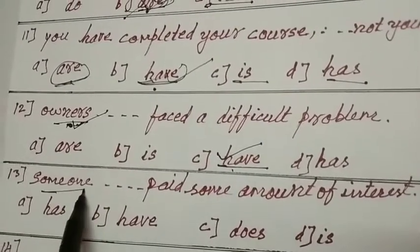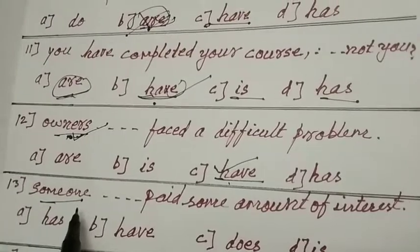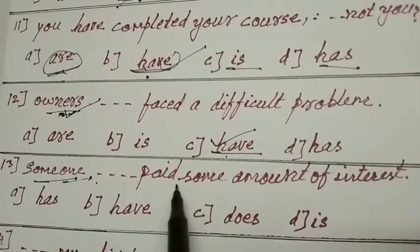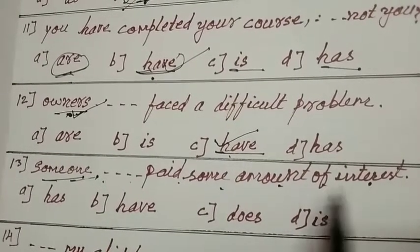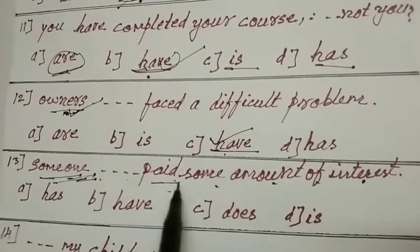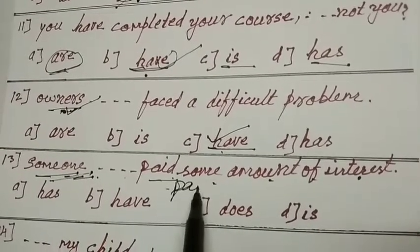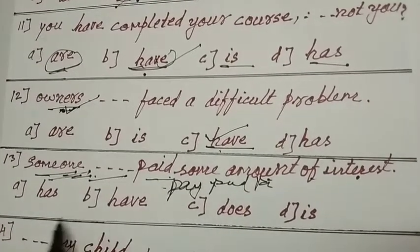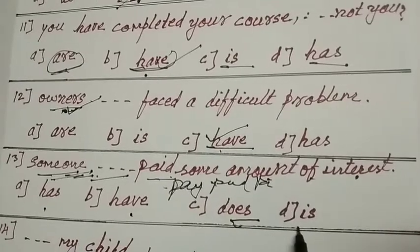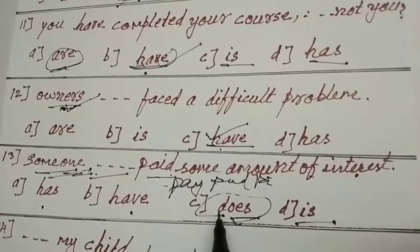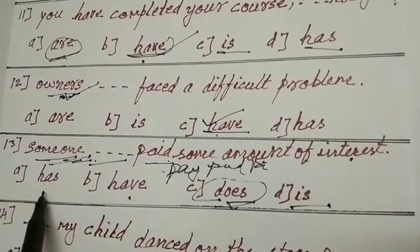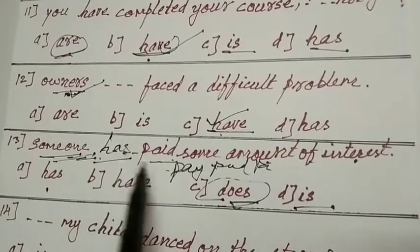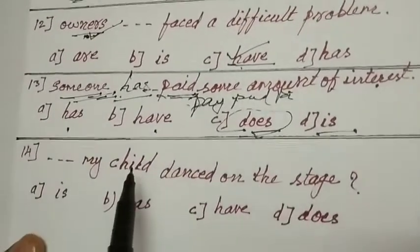Someone paid some amount of interest. Someone, someone means one person. Pay second form paid, third form paid. Someone, has or have or does or is? Does does not come friends. Someone has. Someone means third form. C is your answer.